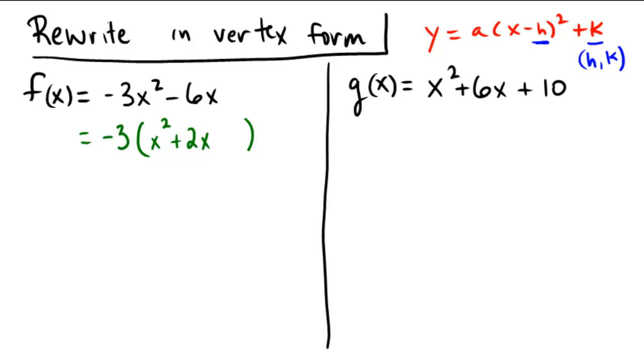To complete the square, recall from a previous video that we have to take the coefficient to the linear term, the 2 here, take that 2, divide by 2, and then square it. We always take the number, divide it by 2, and square it. So 2 divided by 2 is 1, 1 squared is 1, so I fill in this blank by putting a plus 1.